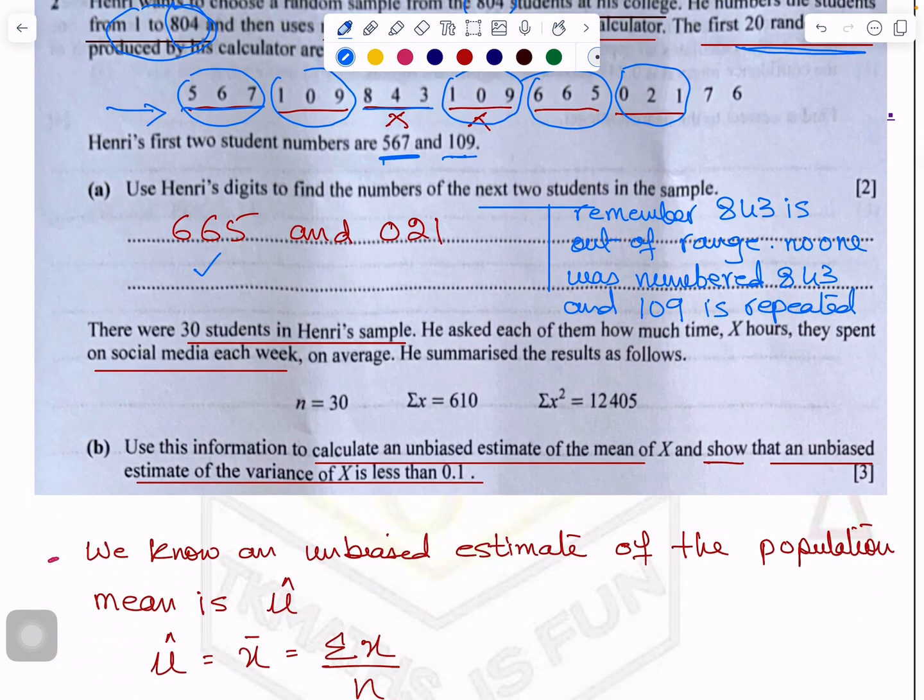After that, it is about Henry's sample. This question is from the unbiased estimation of the mean and variance. There are 30 students in Henry's sample. And what is this representing? The variable x is actually representing the time spent on social media each week on average. And the data summarized is given to you here. n is representing 30 students. Sigma x is representing the sum of those timings he has calculated for 30 students. And sigma x squared is squaring all the timings and then adding it up.